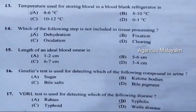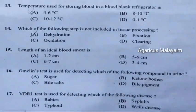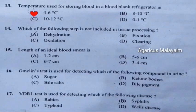Thirteenth question: Temperature used for storing blood in a blood bank refrigerator is. Correct answer is Option A: Four to six degrees Celsius.